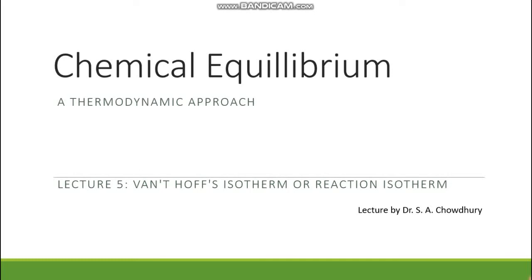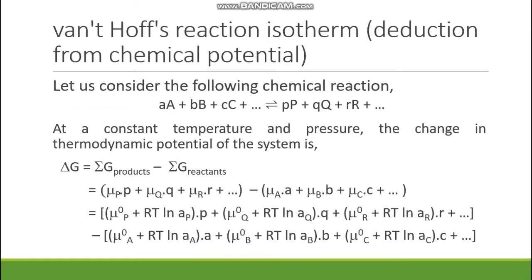The next subtopic of chemical equilibrium is Van't Hoff's isotherm, simply known as the reaction isotherm. We have to derive this from the expression of chemical potential. We take a general chemical reaction: aA + bB + cC + ... = pP + qQ + rR + ... at constant temperature and pressure. The change in thermodynamic potential of the system is the chemical potential or free energy.